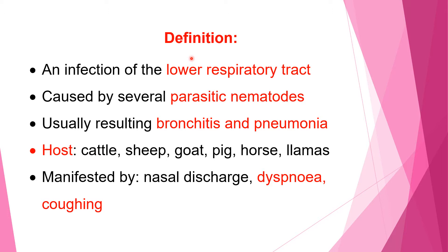Worminous Bronchitis is an infection of the lower respiratory tract — trachea, bronchi, bronchioles, and lungs — mostly presenting as bronchitis and bronchopneumonia. It is caused by several parasites of the nematode group, usually causing bronchitis and pneumonia. The common hosts are cattle, sheep, goat, pig, horse, and llama. The disease is manifested mainly by nasal discharge, dyspnea, and coughing.